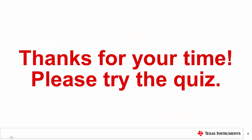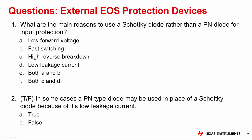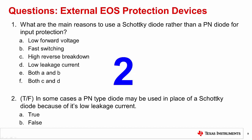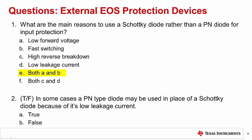That concludes this video. Thank you for watching. Please try the quiz to check your understanding of this video's content. Question one: what are the main reasons to use a Schottky diode rather than a PN diode for input protection? The correct answer is E, both A and B. Schottky diodes have a forward drop of about 0.3 volts and are known for fast switching.